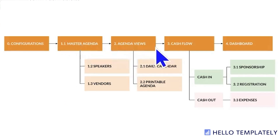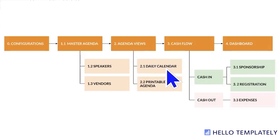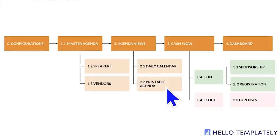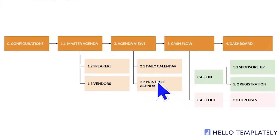The master agenda breaks off into two different agenda views. One is a calendar view similar to a column-based calendar, and two is a printable agenda. This is a key feature: as your event evolves from day one to day five, the agenda changes constantly, and the printable agenda is a print-ready, well-formatted, readable format of the master agenda.